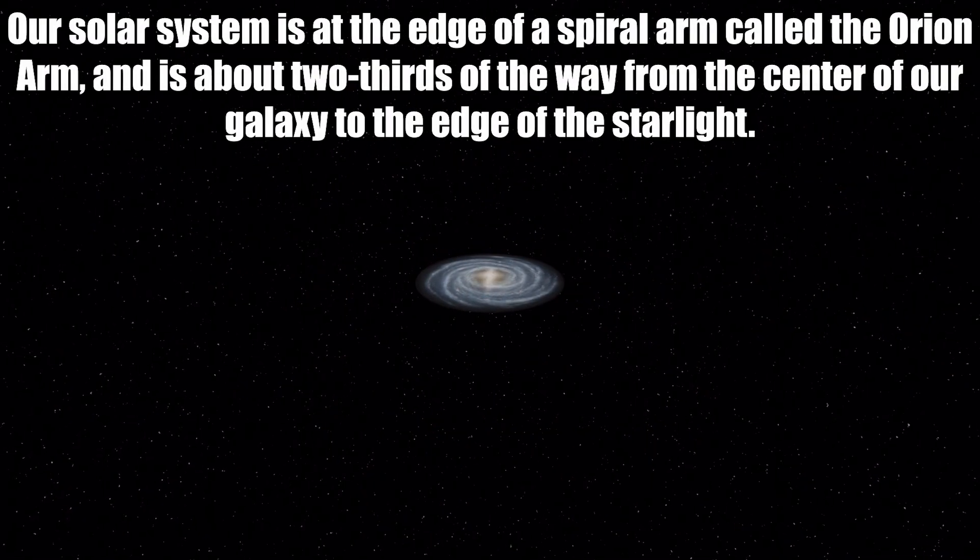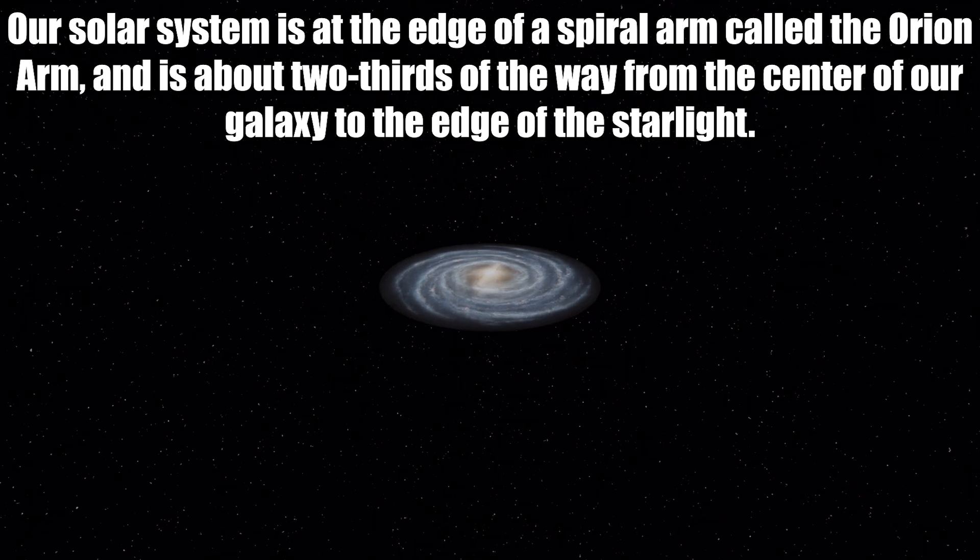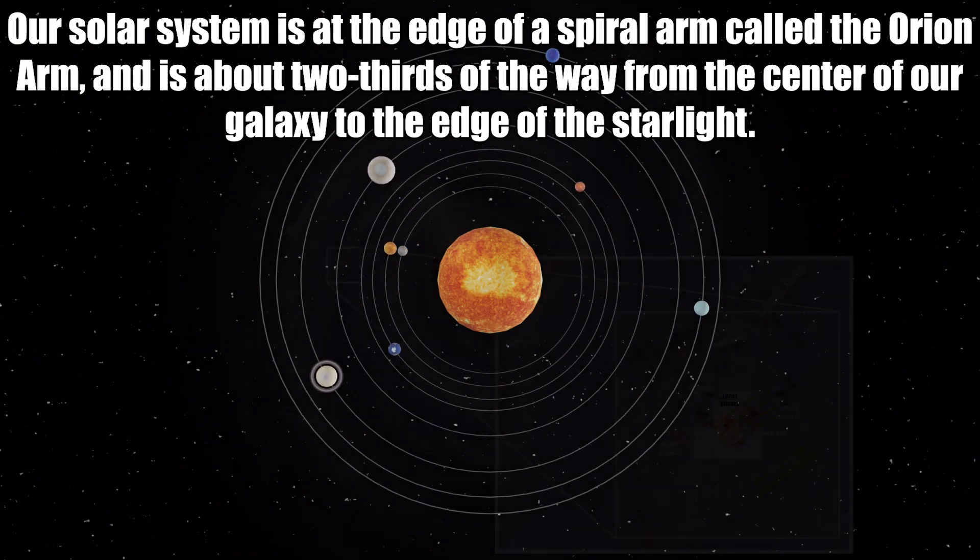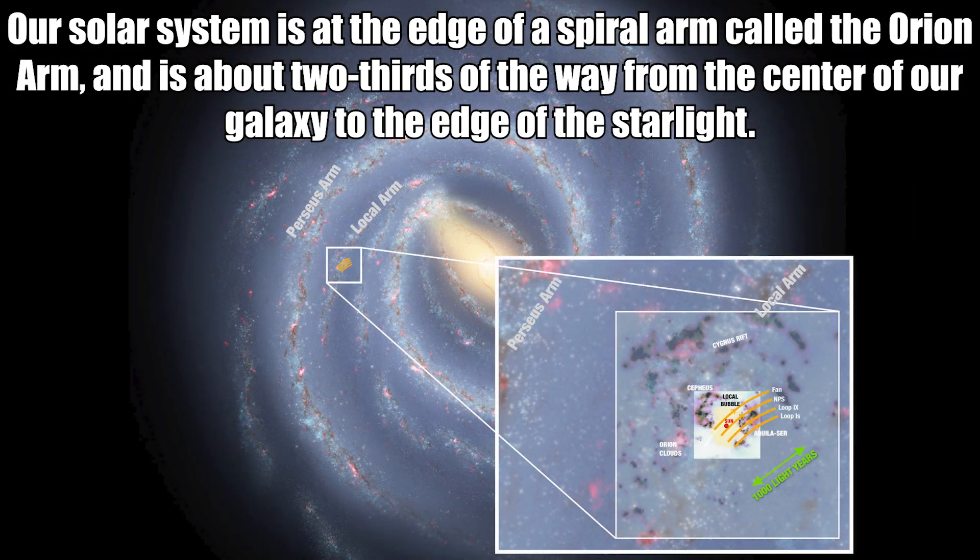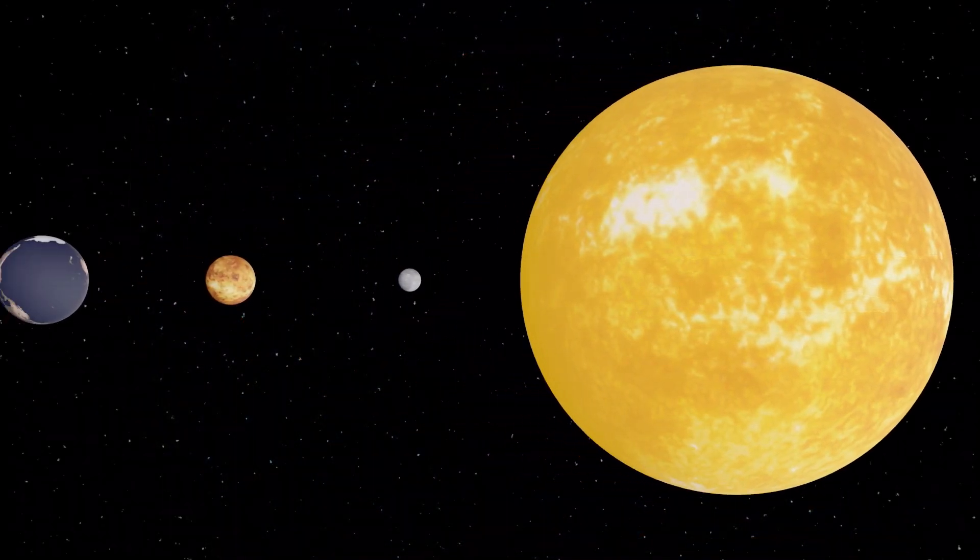Next question, where are we in the Milky Way galaxy? Our own galaxy is called the Milky Way galaxy. Our solar system is at the edge of a spiral arm called the Orion Arm and is about two-thirds of the way from the center of our galaxy to the edge of the starlight. And the Earth is the third planet from the sun in our solar system.